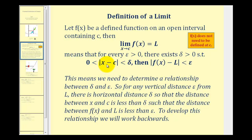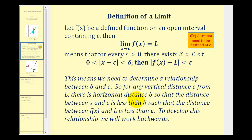The distance between x and c is greater than 0 and less than delta, so delta is a horizontal distance. Then the distance between the function and the limit is less than epsilon, so epsilon will be a vertical distance from L. This means that in order to prove a limit exists we need a relationship between delta and epsilon — for any vertical distance epsilon from L, there needs to be a horizontal distance delta so that if the distance between x and c is less than delta, then the distance between f of x and L is less than epsilon.